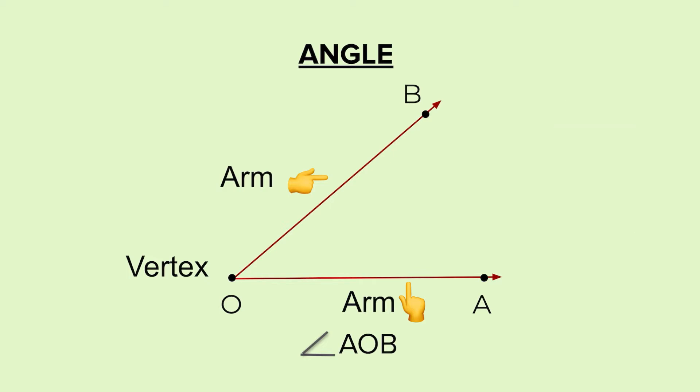We represent the angle by this symbol and we write angle AOB. Angle AOB represents this angle between the two rays.